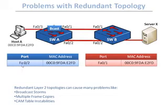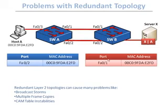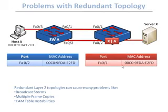Switch A's MAC address table is updated to show host A reachable via F02. So when server X sends packets to host A, switch B looks up the MAC address and forwards the packet to switch A through F01. Switch A then checks its table, sees F02, and sends the packet back toward switch B.